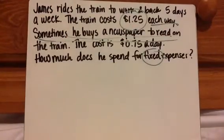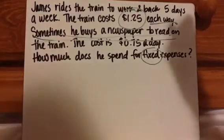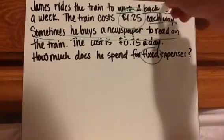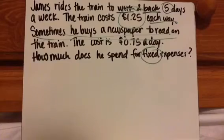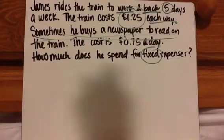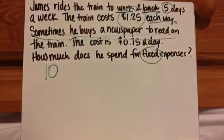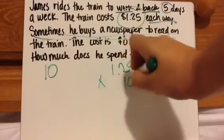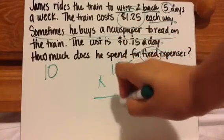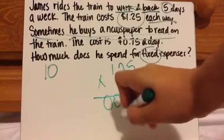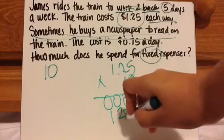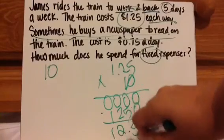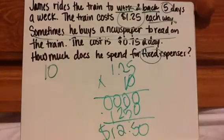So how much does he spend for fixed expenses? You need to pay attention because it says five days a week, but each way — when going to work it's $1.25, and coming back it's also $1.25. So it's actually 10 times he's getting on the train. If he's getting on the train 10 times, you do $1.25 times 10, and the total cost for fixed expenses would be $12.50.